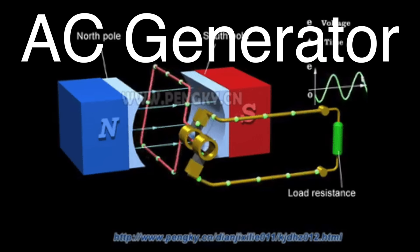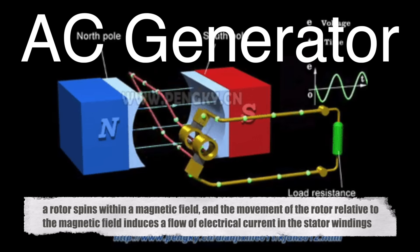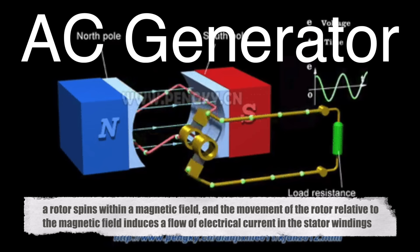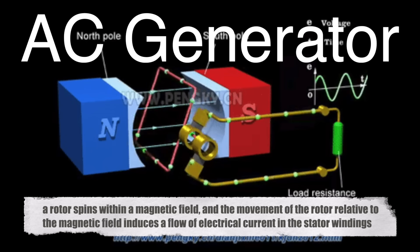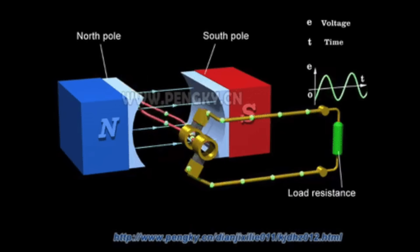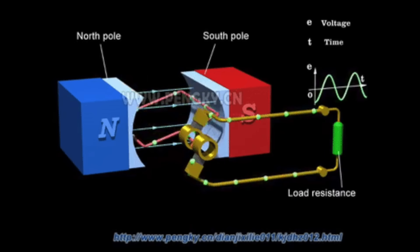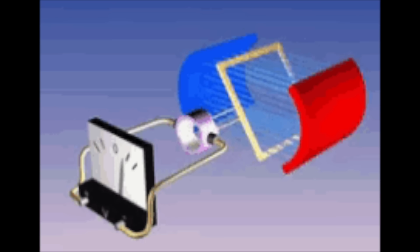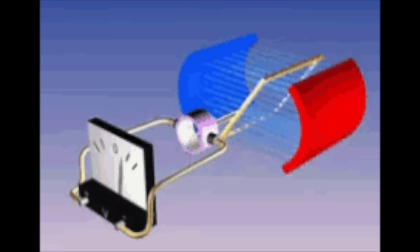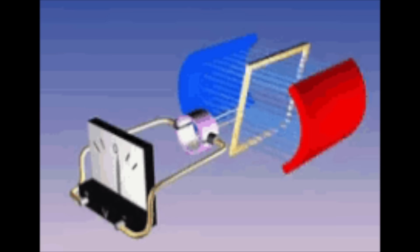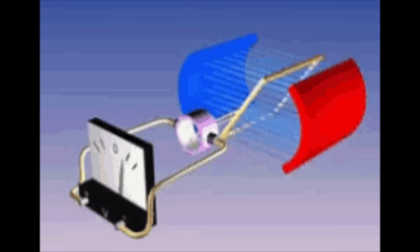In a typical AC generator, a rotor spins within a magnetic field, and the movement of the rotor relative to the magnetic field induces a flow of electrical current in the stator windings. The frequency of the AC produced is directly related to the speed of the rotor's rotation, which is why maintaining a consistent speed is critical in applications where frequency needs to be stable, such as in power generation for the electrical grid.